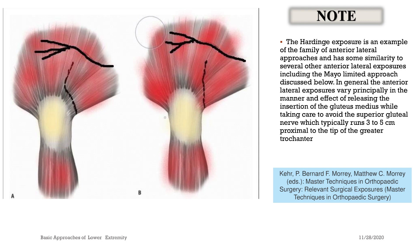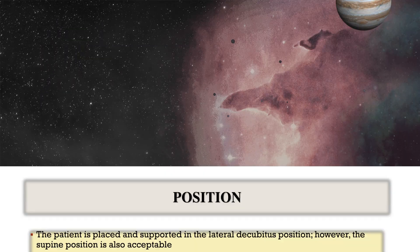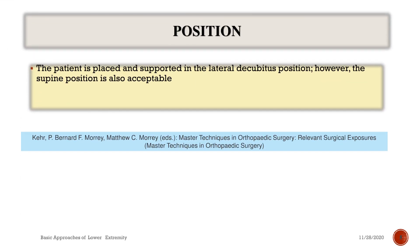See the location of the superior gluteal nerve and the model of gluteus medius splitting — two different types of splitting are shown here, as well as another splitting model. The patient is placed and supported in the lateral decubitus position; however, the supine position is also acceptable.